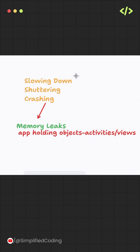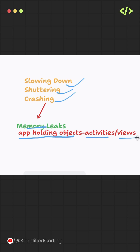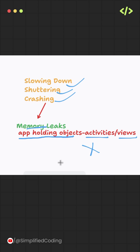Are your Android apps slowing down, stuttering or even crashing? It might be because of memory leaks. A memory leak happens when your app keeps holding onto objects like activities or views that it's not using anymore. Over time, this wastes precious memory, causing your app to lag or the system to kill your app in the background.